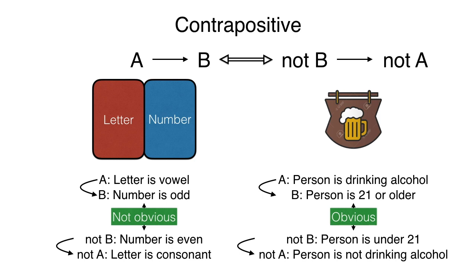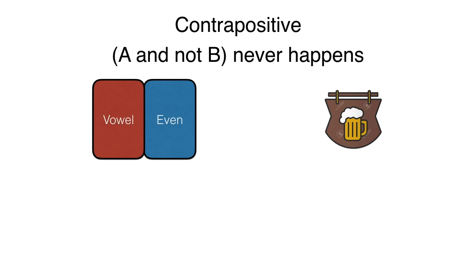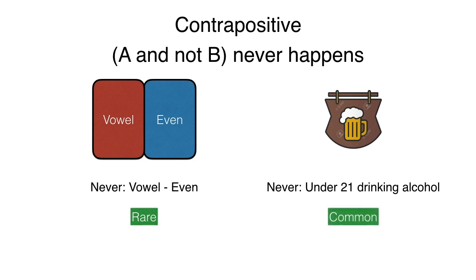Let me elaborate for clarity. The statement A implies B is equivalent to saying that A and not B never happens. In the card case, it means that we will never have a card that has a vowel on one side and an even number on the other side. In the bar case, it means we'll never have an underage person drinking alcohol. The card side is not obvious because those cards are rare. This is not something we see every day and we're not used to it. However, the bar case is common sense because it relates to the world in which we live in, so it is obvious.